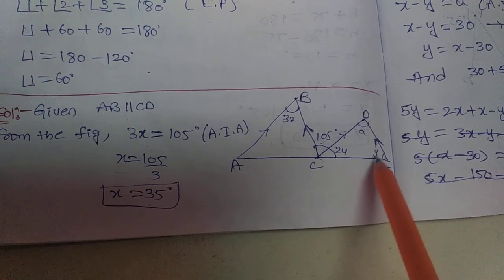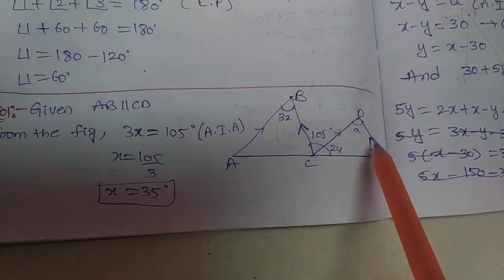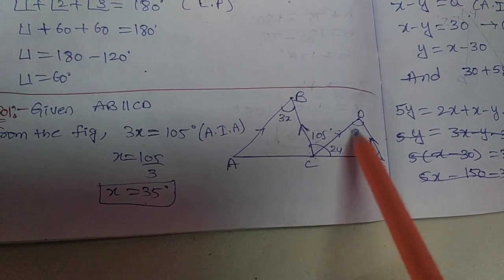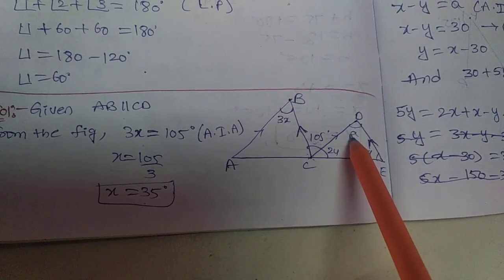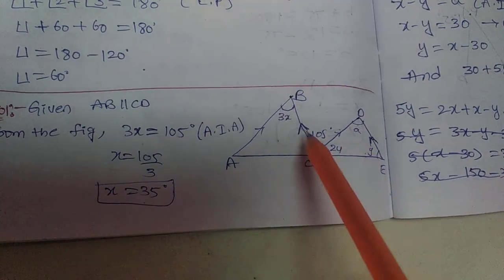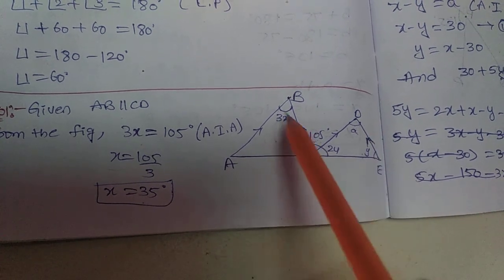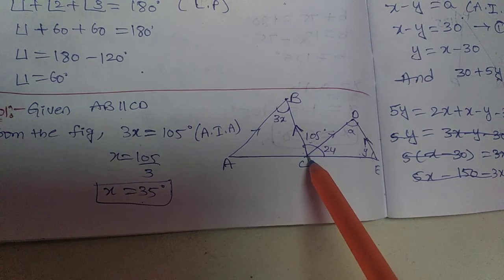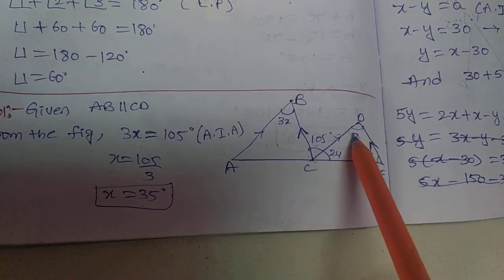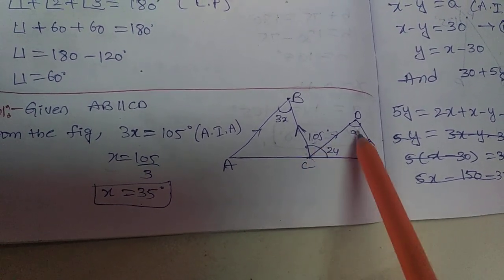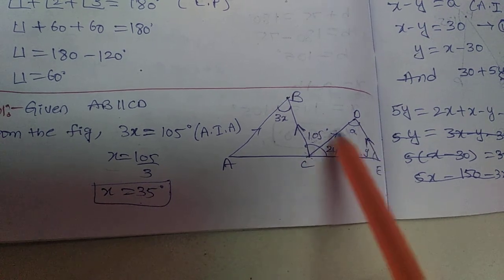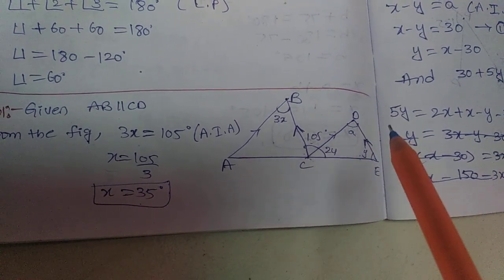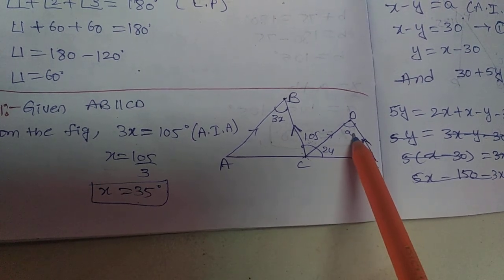We still need to find the Y angle. Observe triangle CDE — to find Y we first need another angle. These two are the parallel lines BC and DE, and CD is the transversal line. The two angles are alternate interior angles, so this angle is also equal to 105 degrees.